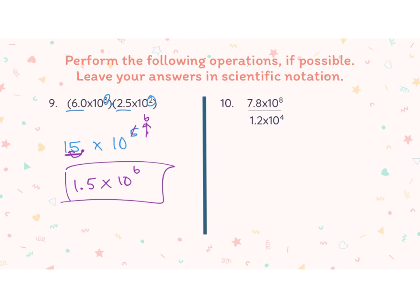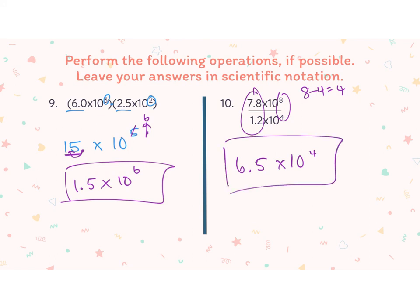For the last one, I'm dividing. I divide the coefficients: 7.8 divided by 1.2 gives me 6.5. Then I subtract the exponents to get times 10 to the fourth. My scientific notation is correct — I have only one digit in front of the decimal point. That takes us to the end of our notes for today. Thanks for tuning in, and I'll catch you next time.